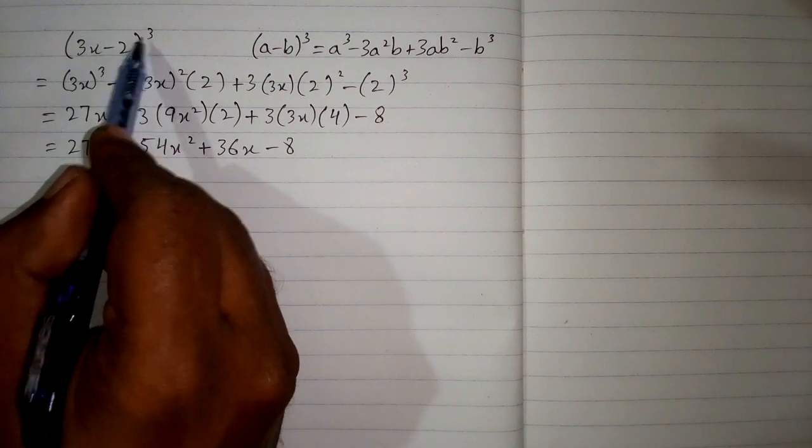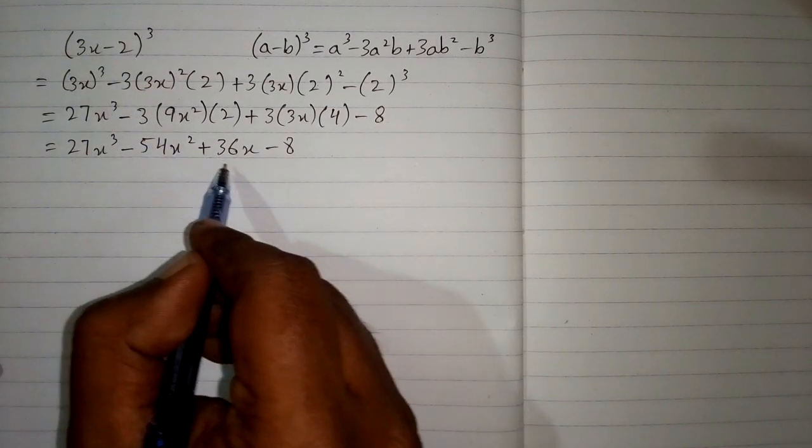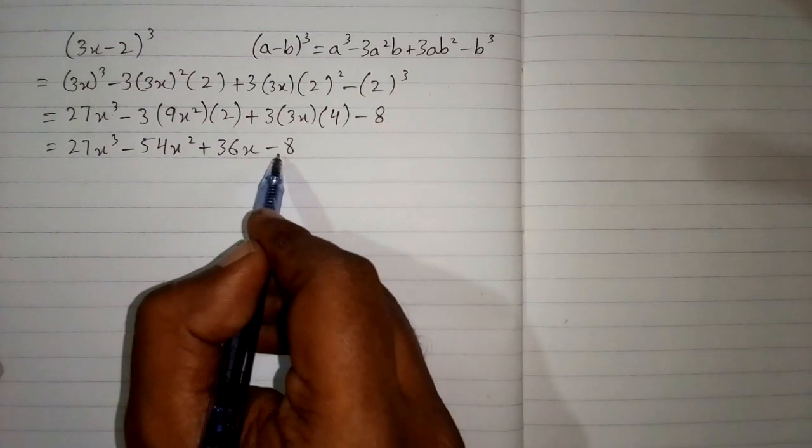So 3x minus 2 whole cube is equal to 27x cube minus 54x square plus 36x minus 8.